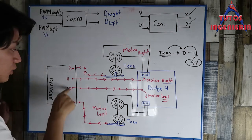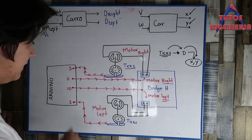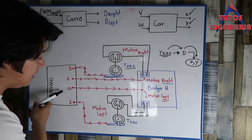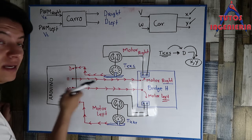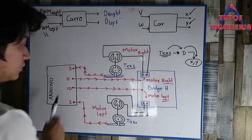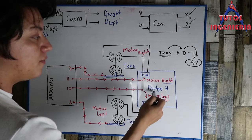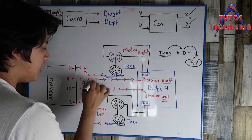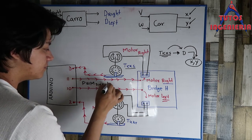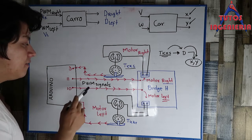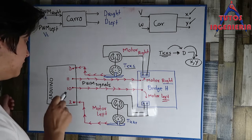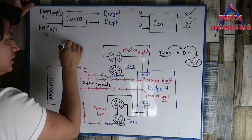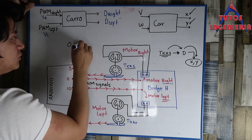What are the inputs of my plant? You can see that the inputs of the plant are pin 11 and pin 10. Those are the inputs going into the bridge edge, and those signals are called PWM signals. PWM signals are the signals that the Arduino uses to move the motors.